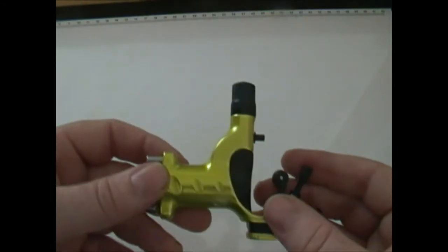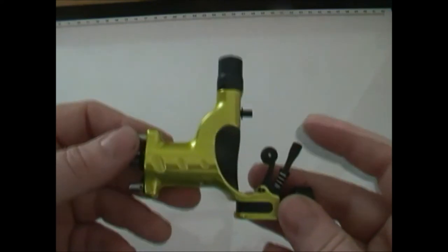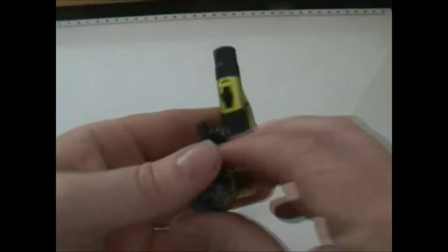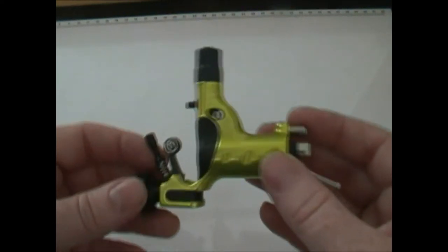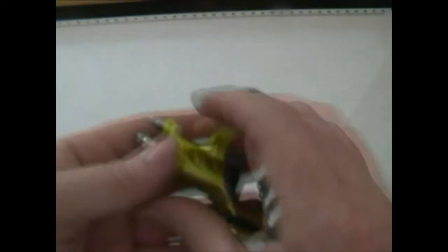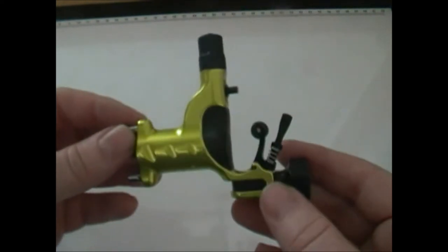The Stingray is sold as a liner from Ink Machines and the Dragonfly is sold as a shader. Though to be honest, both can do either or. But I'll get into that towards the end of the review, what I prefer and my reasons why.